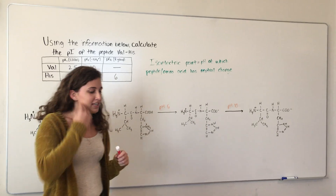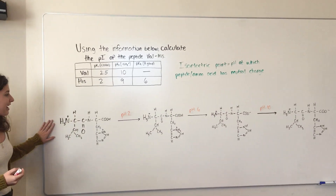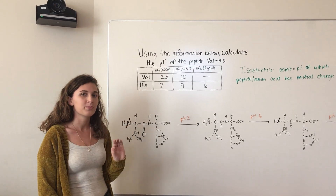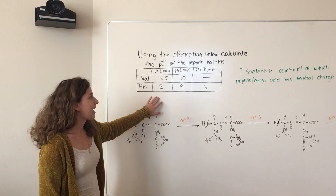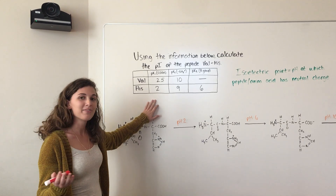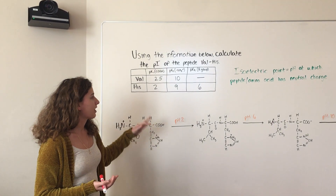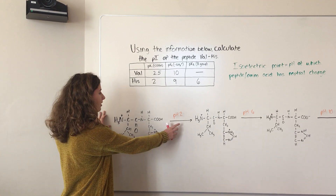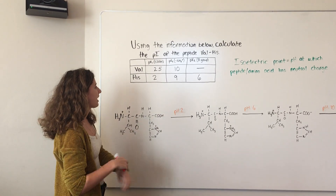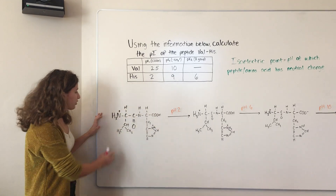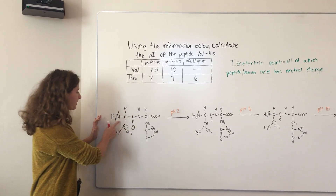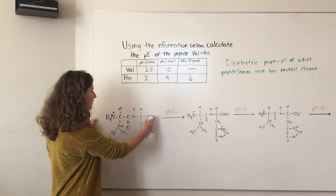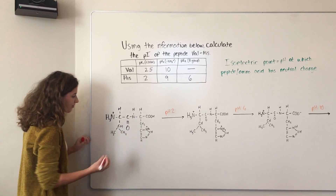The first thing I like to do is draw the peptide at a pH lower than the initial pKa, at a point where it's going to be completely protonated. Remember, the pKa is the midpoint of titration — above that pKa it's going to be deprotonated, and below that pKa it's going to be protonated. So this is the peptide at a pH below the pKa of 2. Drawn out, it's completely protonated: there's a positive charge on the amino group of valine, a positive charge on the R group of histidine, and the carboxyl group is protonated. So this is going to have a charge of +2.